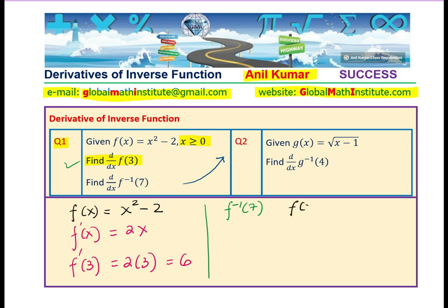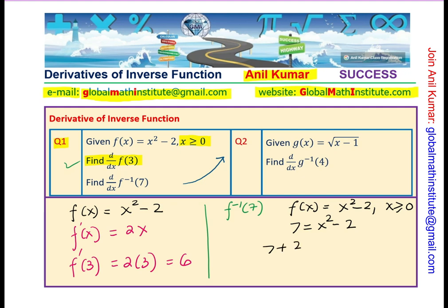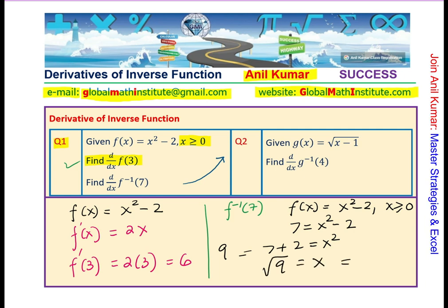Since we have f of x as equal to x square minus 2, where x is greater than equal to 0. So, 7 is the output, we want to find what the input is. So, we can write 7 equals to x square minus 2 or 7 plus 2 equals to x square, which is definitely 9 and square root of 9 is x, which is equal to 3.